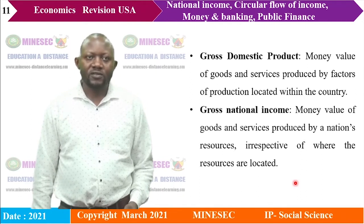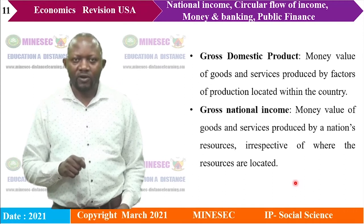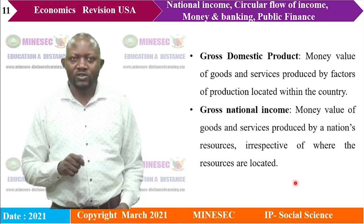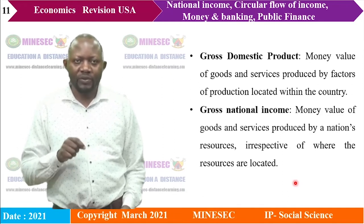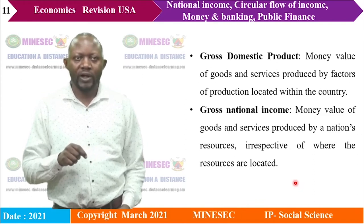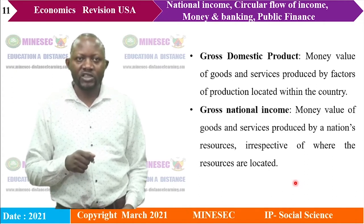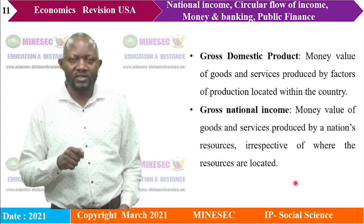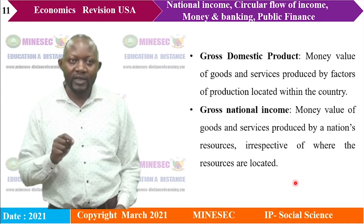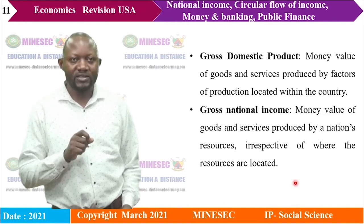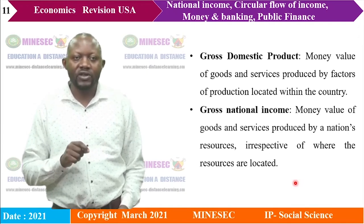Gross domestic product is the money value of goods and services produced by factors of production located within the country within a period of one year. While gross national income, also called gross national product, represents the money value of goods and services produced by a nation's resources, irrespective of where the resources are located — whether within the country or outside — they are all included in gross national income.